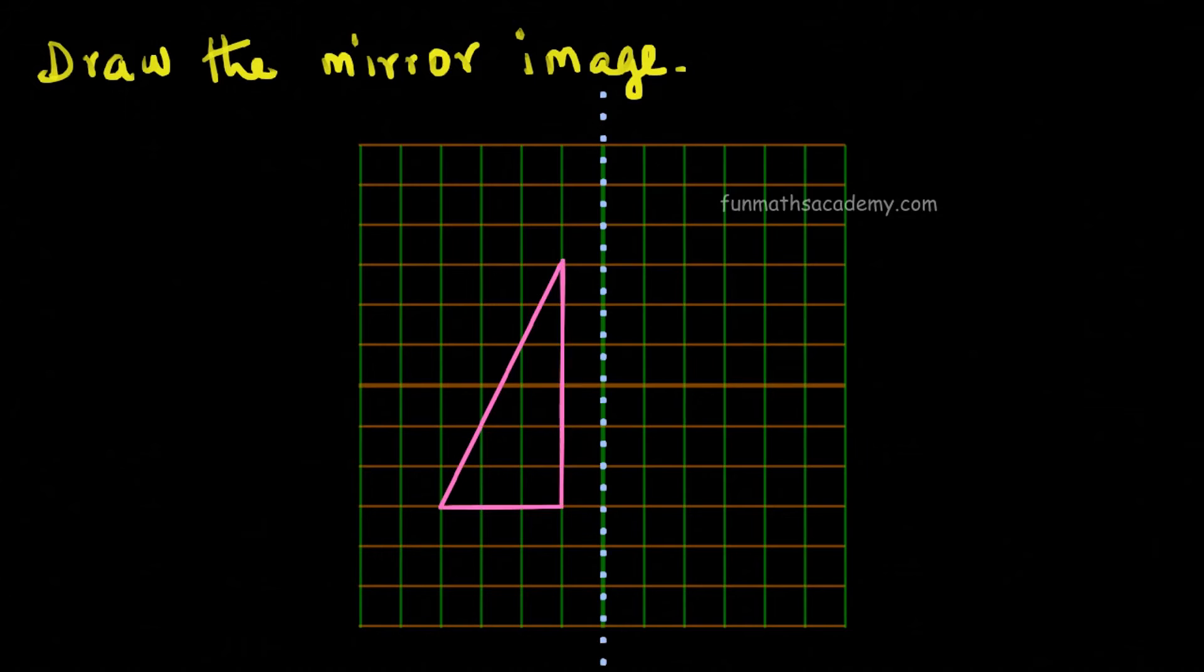In this example, we need to draw a reflection of this shape along the mirror line. Let me teach you a simple way to do that. First, mark all the corner points. There are in total three corners here. We need to draw a shape that reflects these three points on the other side of the mirror line.